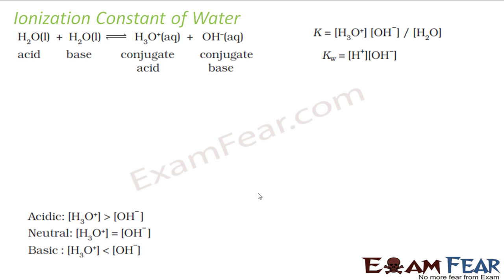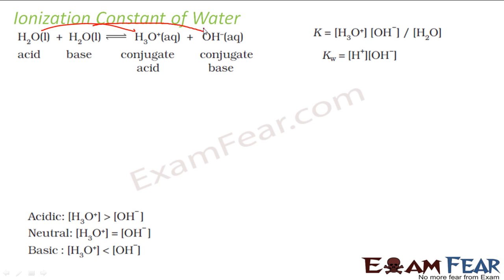Let's talk about the ionization constant of water. As mentioned, water is both an acid and a base. When water reacts with itself, it forms H3O+ and OH- — a very common reaction. One water molecule acts as an acid, donating H+ to become H3O+. For the equilibrium expression, we write H3O+ concentration times OH- concentration divided by H2O concentration squared, but since water is a pure liquid we can ignore it.